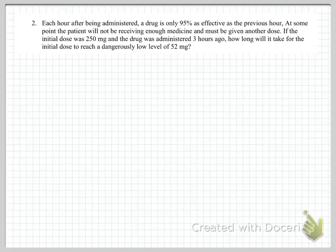Next example from medicine. A drug is only 95% as effective as the previous hour, and we're interested to know how long it takes for the initial dose to reduce to 52 milligrams from 250 milligrams. We define the initial dose as D0 equals 250 milligrams. In the equation, it's a decay equation, an exponential equation, with a negative rate of 0.05. That's 5% because each hour the drug loses 5% of its effectiveness, so we have to subtract 0.05.